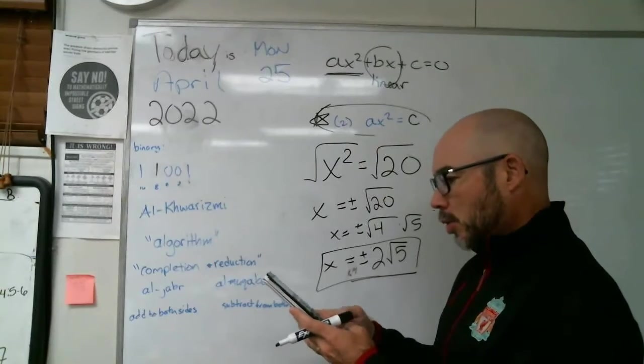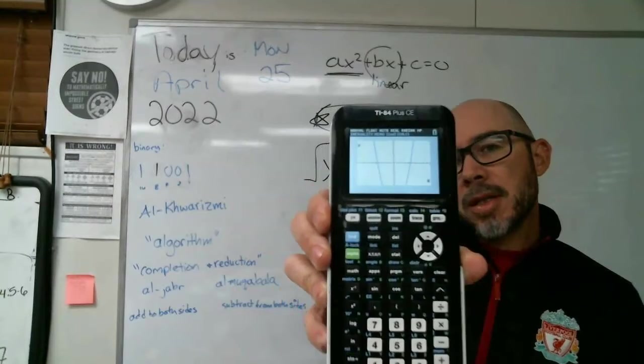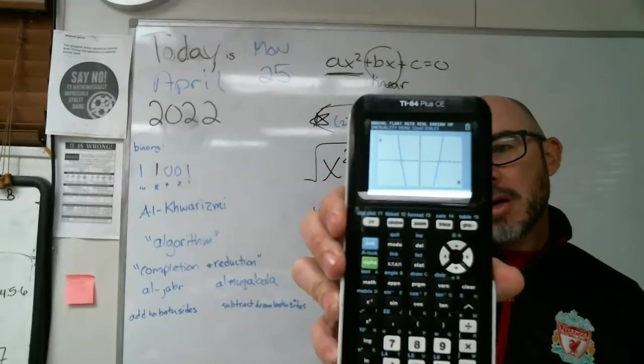minus 20 and graphed it. It appears that it crosses somewhere between four and five.